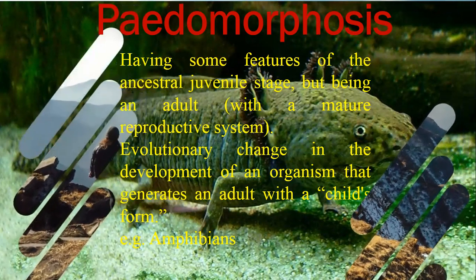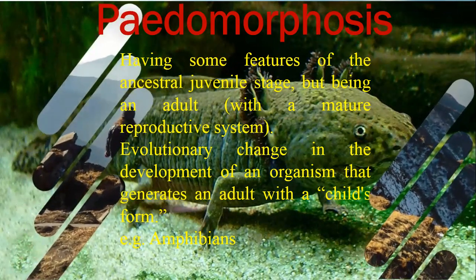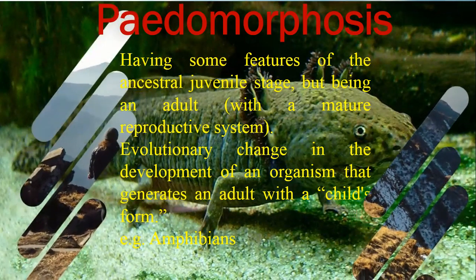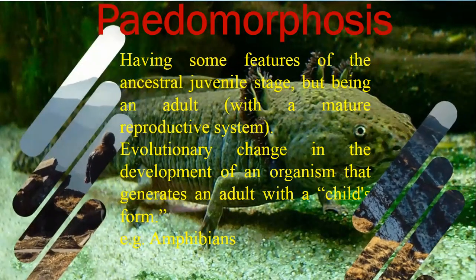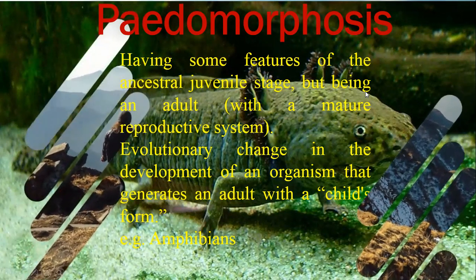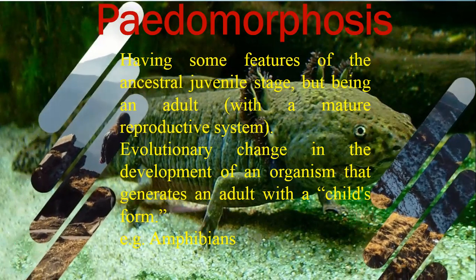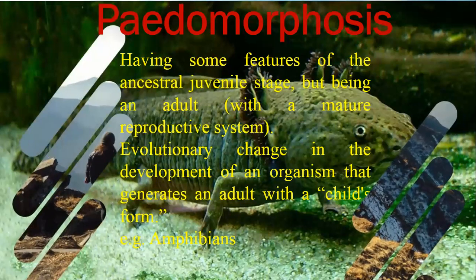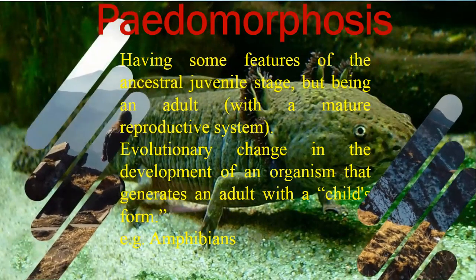For amphibians, as you can see in the background picture, this is basically the retention of gills. Gill retention is seen in amphibians — this is a larval-stage feature of the animal that is retained in the adult stage.